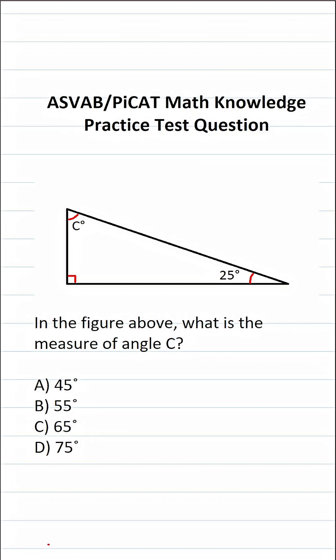We can see that we have a right triangle, which means that this angle right here is 90 degrees. This angle is 25 degrees, and this angle C is unknown.